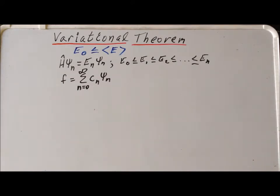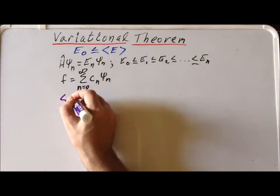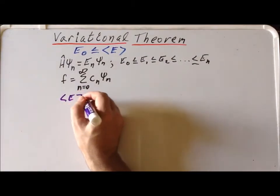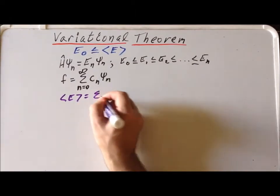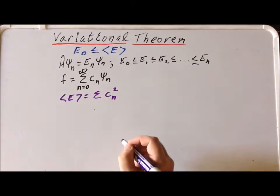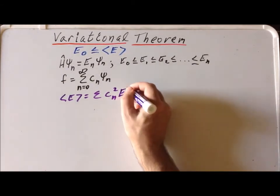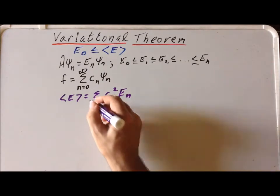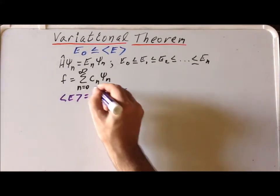We also know that for this particular expression, if we try to calculate the expectation value, it's going to be a sum of the coefficients squared times the corresponding eigenvalues. Again, n starts at 0 and can go all the way up to infinity.